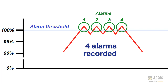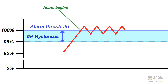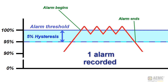Hysteresis filters out these alarms by introducing a measurement lag into the process. In our example, if we set hysteresis to 5%, an alarm will remain active until the measurement falls 5% below the trigger threshold. This also applies to minimum alarms — if the threshold is passed, the alarm remains active until the measurement exceeds the threshold by the hysteresis percentage.